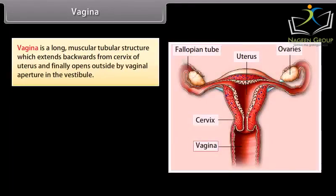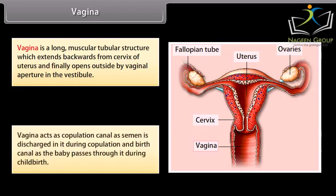The vagina is a long muscular tubular structure which extends backwards from the cervix of the uterus and opens outside by the vaginal aperture in the vestibule. The vagina acts as a copulation canal, as semen is discharged into it during copulation, and also as a birth canal, as the baby passes through it during childbirth.